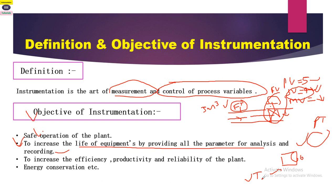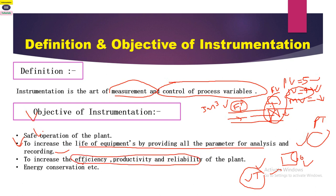The vibration data is monitored by operators or plant instrumentation engineers. If higher-side vibration is observed, the equipment can be stopped, which increases its life. Other objectives include increasing efficiency, productivity, and reliability of the plant, as well as energy conservation.